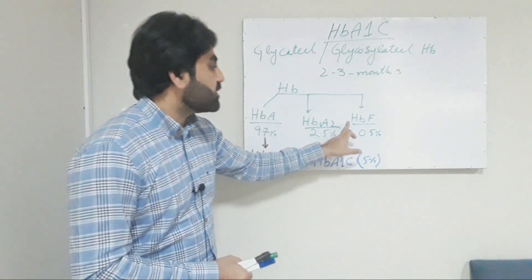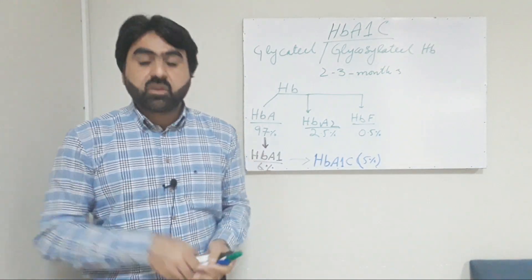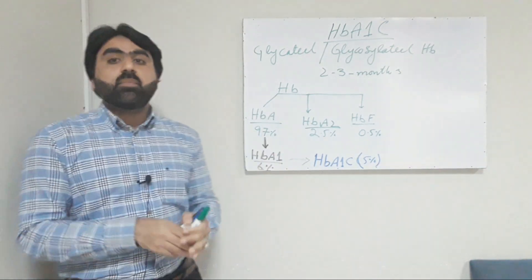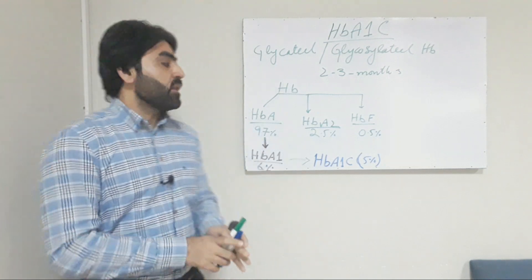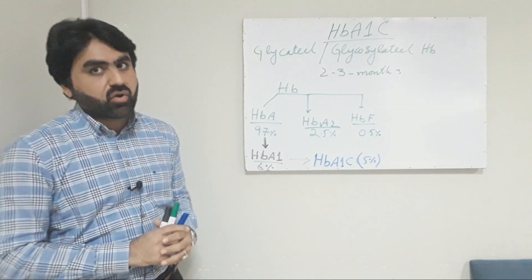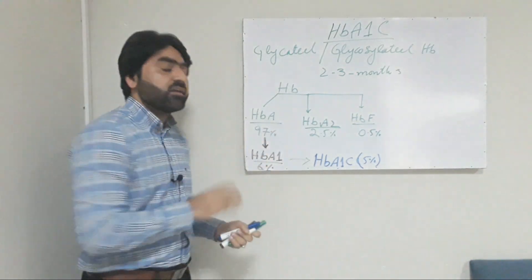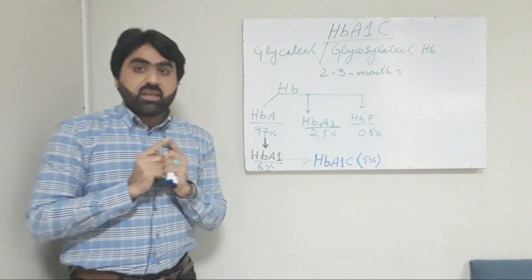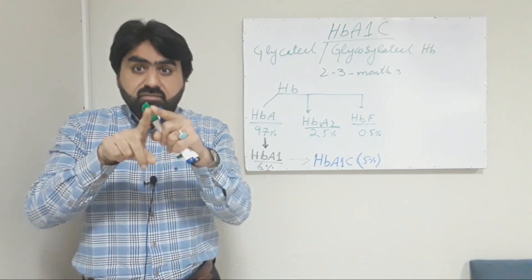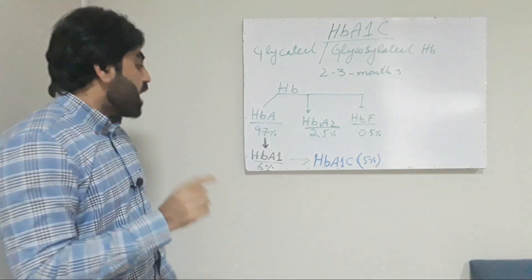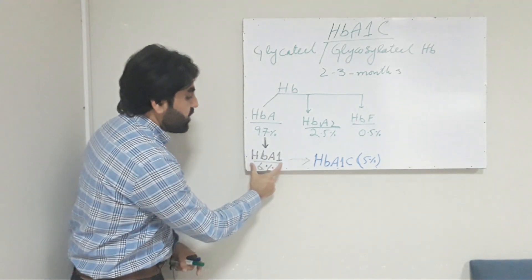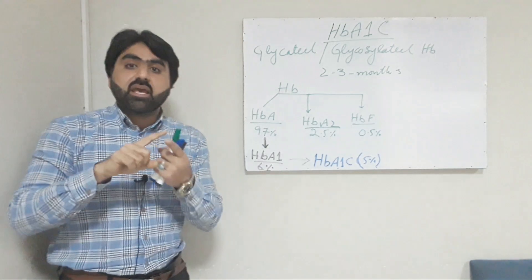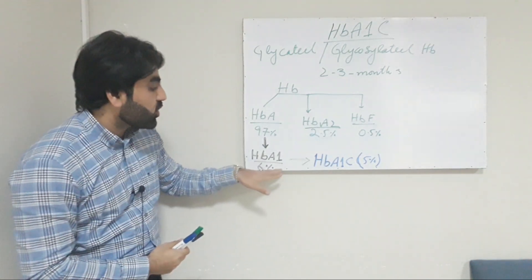The third fraction is hemoglobin F, which is 0.5%. Though there are some exceptions besides these three fractions, usually an adult individual contains these three fractions of hemoglobin. The most abundant fraction is hemoglobin A at 97%. This hemoglobin A has further sub-fractions, and among those fractions, HbA1 is a fraction which constitutes a total of 6% of the whole hemoglobin A.